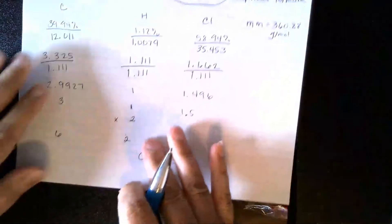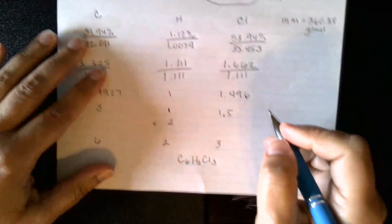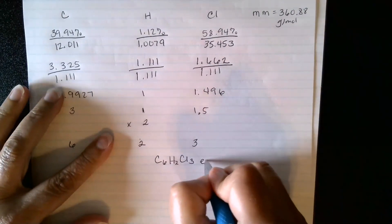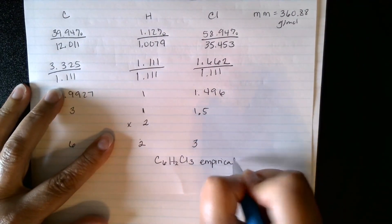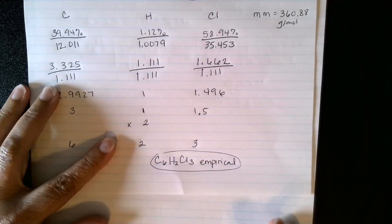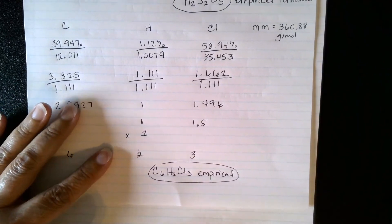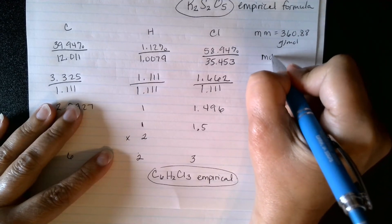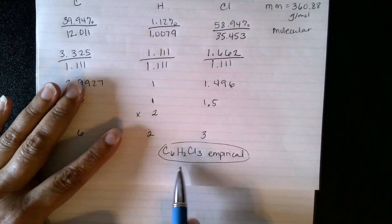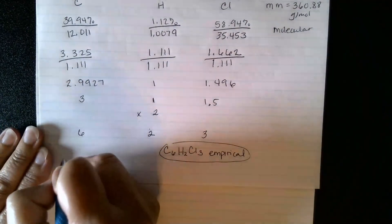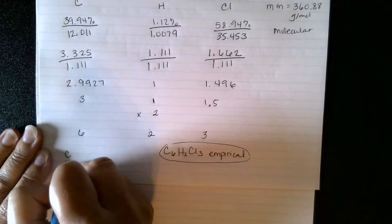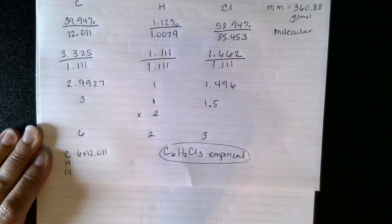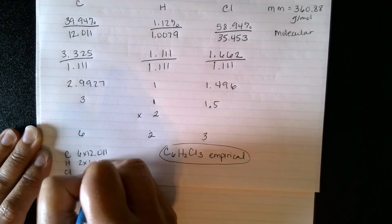Now, that is my empirical. Now, I have to find my molecular. So my molecular, I know, is a multiple, and they have given me this is the mass of my molecular, because this is the molecular mass. So I'm going to have to find the mass of this. So carbon, hydrogen, and chlorine. So I'm finding my molecular mass.